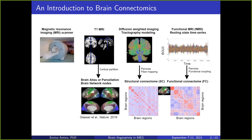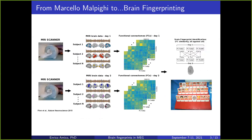Everything I described is what I do every day — starting from raw brain data and arriving at these connectivity matrices. What I'm going to talk about is how we use this summary statistic provided by functional connections to find fingerprints in the brain. The concept of fingerprints is actually related to the fingertips of a human hand, discovered in the 16th century by Italian physiologist Marcello Malpighi.